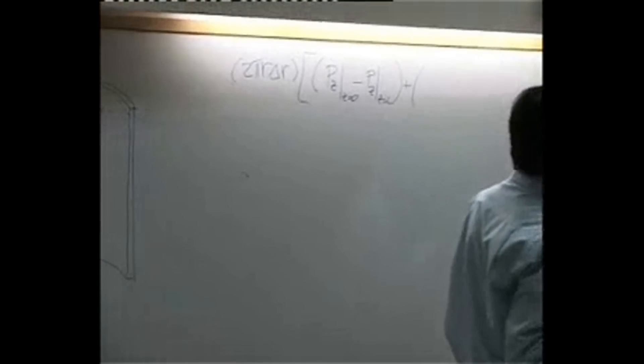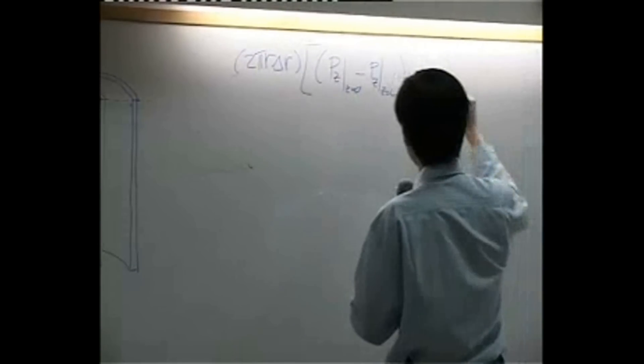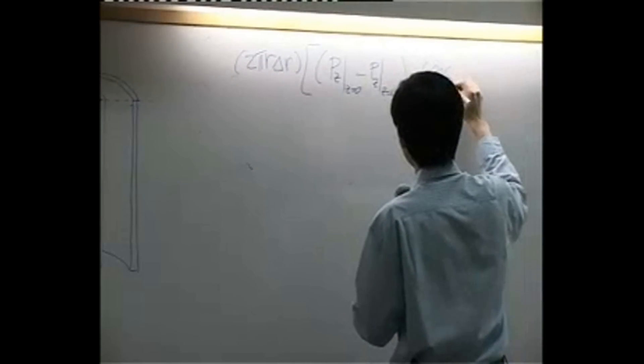And then once again, vc is a scalar in this case, so I'm going to shorten them to be vc squared.